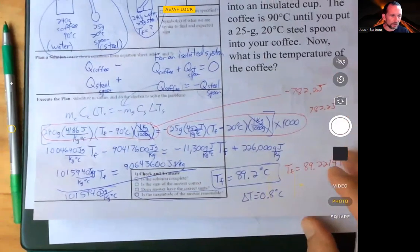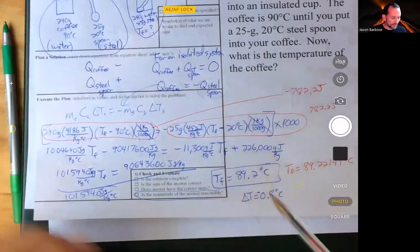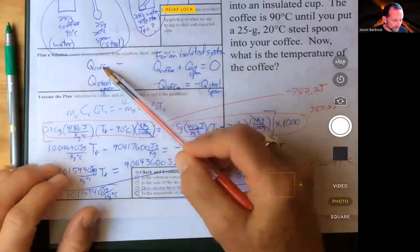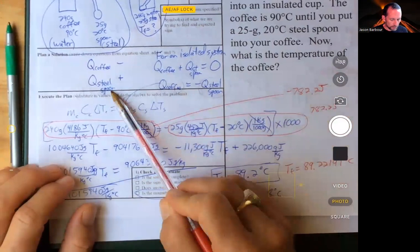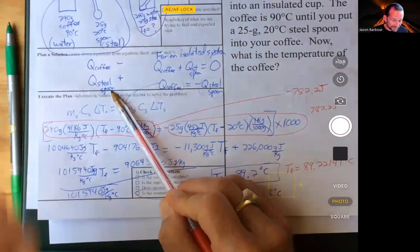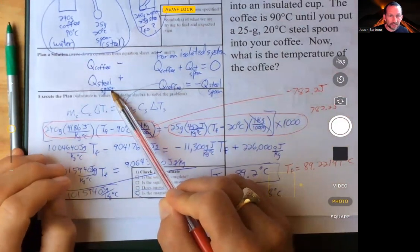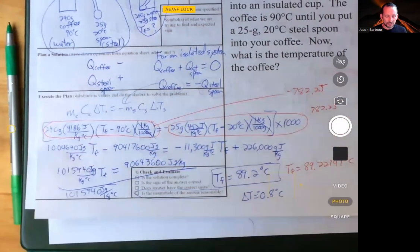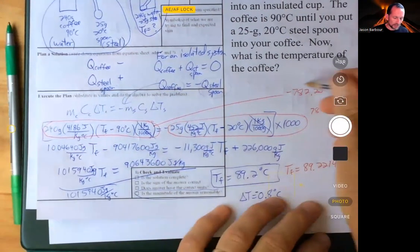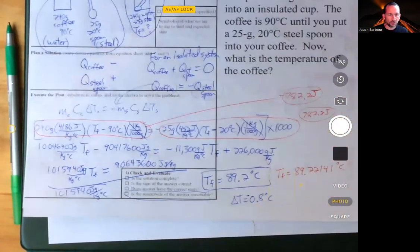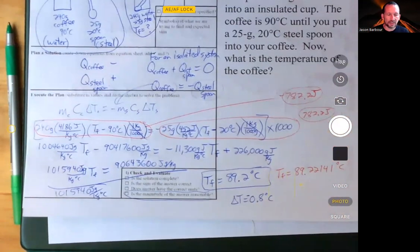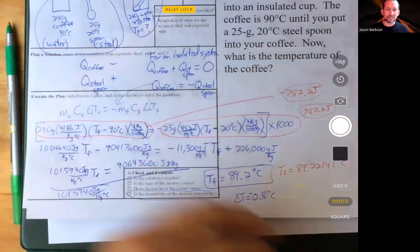And so I hope that makes sense to you now. It was just a significant figure issue. But you can demonstrate that even though the coffee is changing by about 0.8 degrees and the steel spoon is changing by about 69.2 degrees, the amount of energy involved is 782.2 joules for both of them. One's losing 782.2 joules and one is gaining 782.2 joules. And that's what we're talking about when we say a system is isolated.